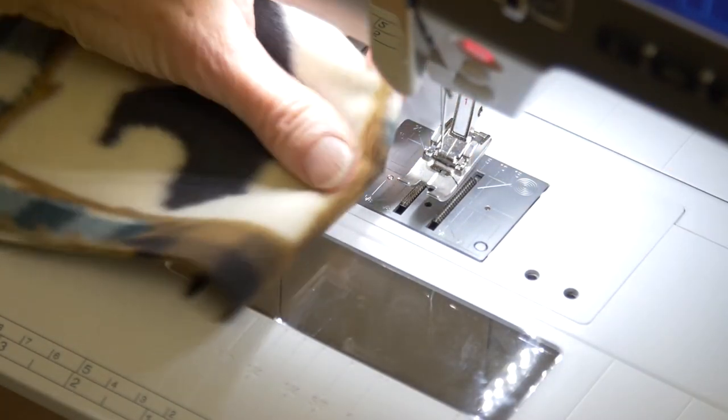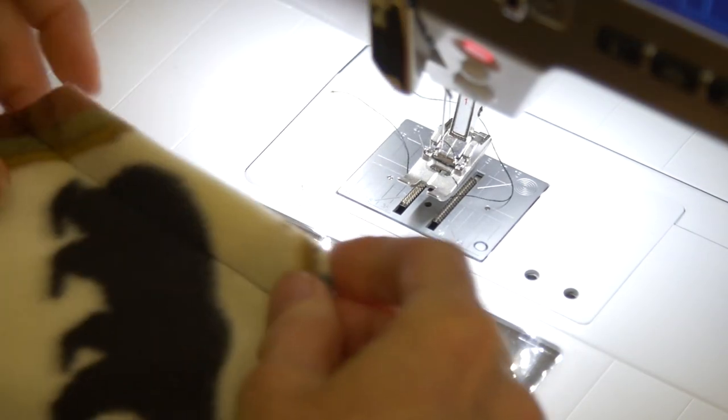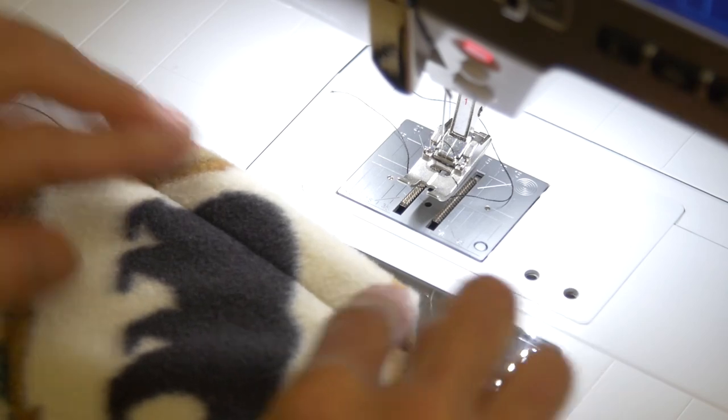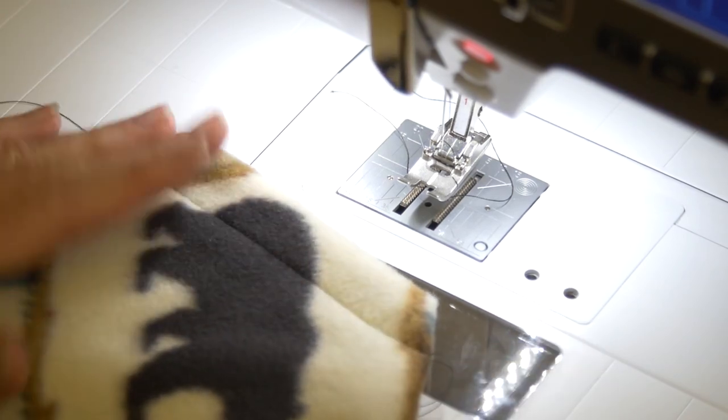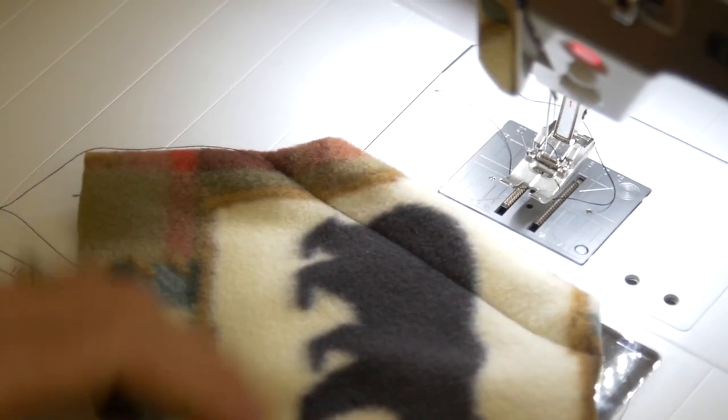And then again, you don't backstitch. You are just going to pull a thread through and tie a knot so that we don't wind up with stitching or backstitching on the top that shows where we don't want it. Okay, we are now ready to pull the thread through and then pin this onto our jacket.